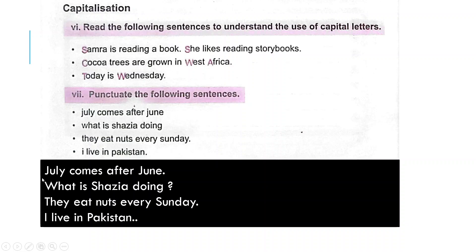J should be capital. The corrected sentences are: July comes after June. What is Shazia doing? They eat nuts every Sunday. I live in Pakistan.